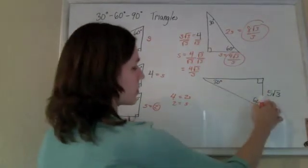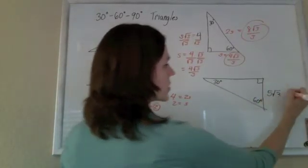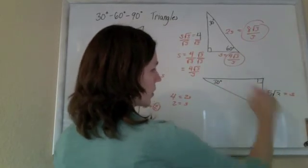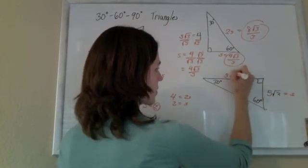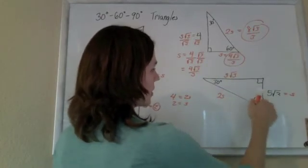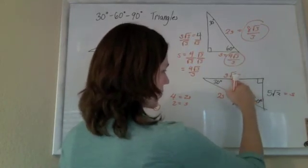One last problem. We see the 5 rad 3 here. That's the short leg. So that's supposed to be the S, the one across from the 30. The one across from the 60 is supposed to be S root 3, and then hypotenuse is 2S. So this one here should be S times root 3.